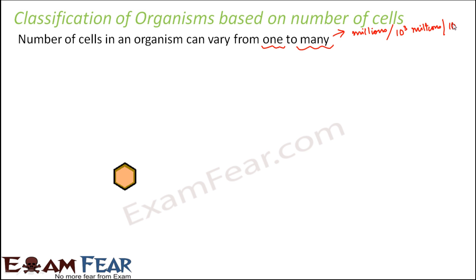When I say trillions, that is nothing but 10 to the power 6 millions. The numbers are huge. Basically, the number of cells in an organism can be anything and can be as low as 1 also.